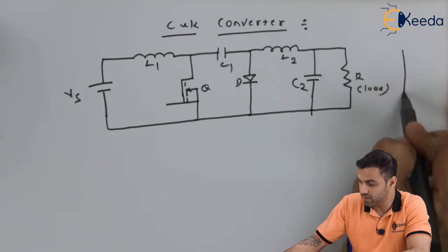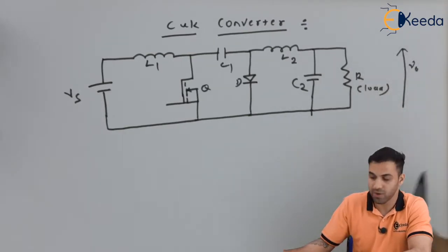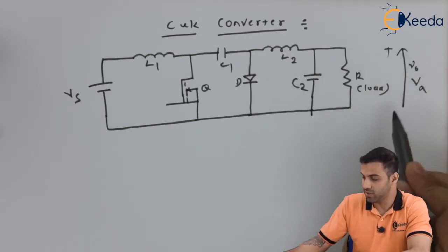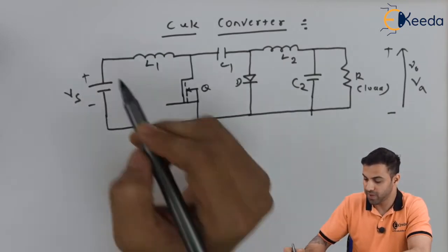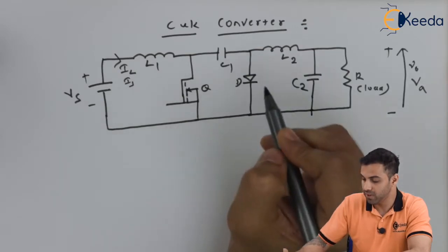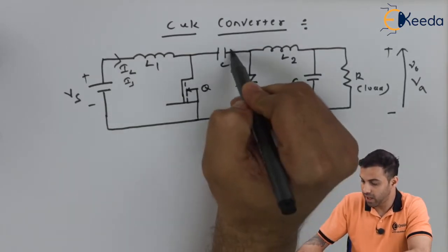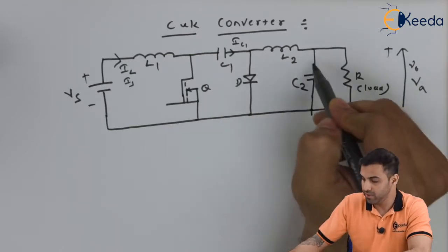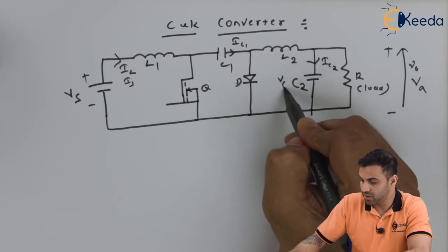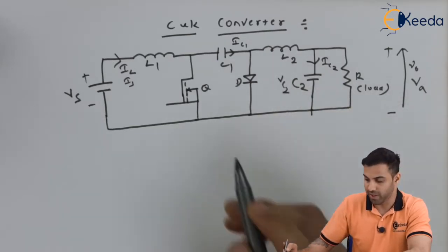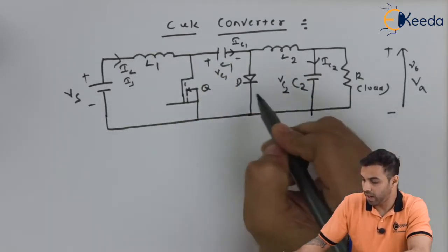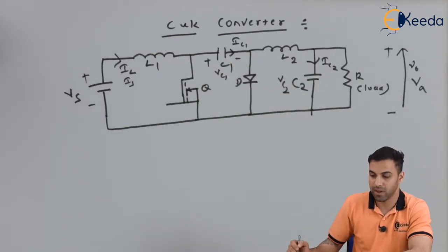Let's label C2 and C1 accordingly, along with the resistive load R. V-naught is the instantaneous output voltage and Va is the average output voltage. IL is the inductor current equal to IS. IC1 and IC2 are the currents across the first and second capacitors respectively, VC1 and VC2 are the voltages across them, and D is the diode.